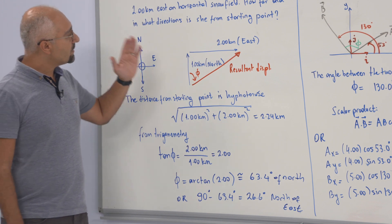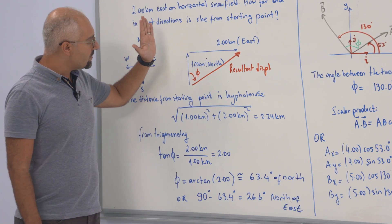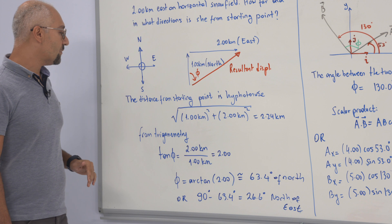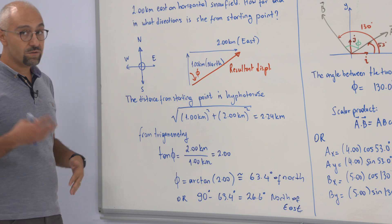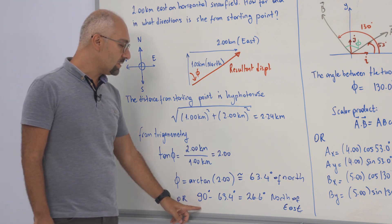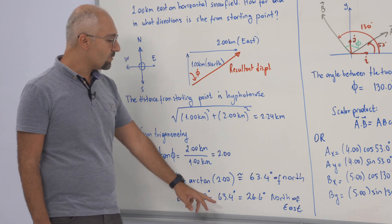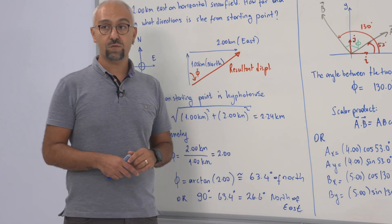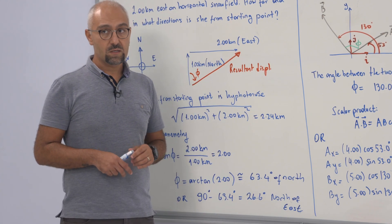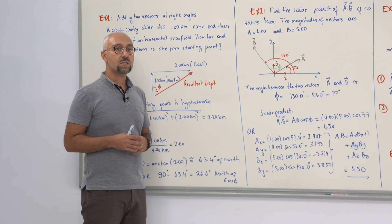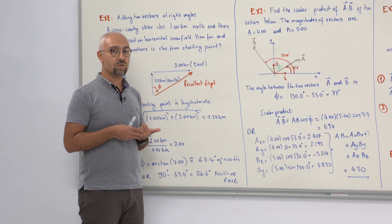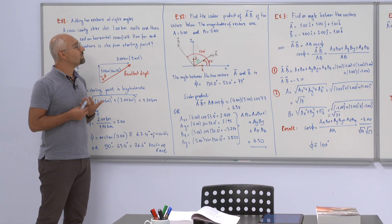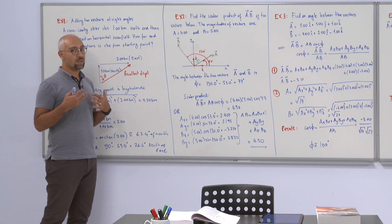So the result is 63.4 degrees of north of east. Alternatively, subtracting from 90 degrees gives 26.6 degrees north of east. This is the basic calculation of vectors — how we can quantify and do the mathematics.